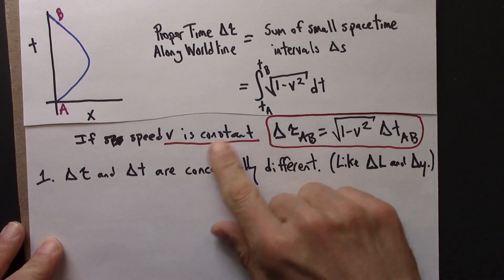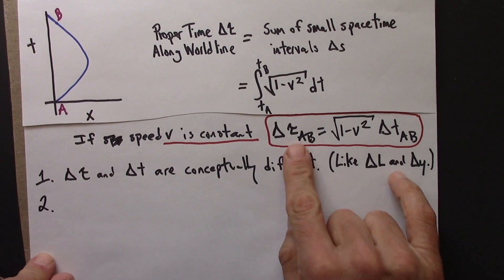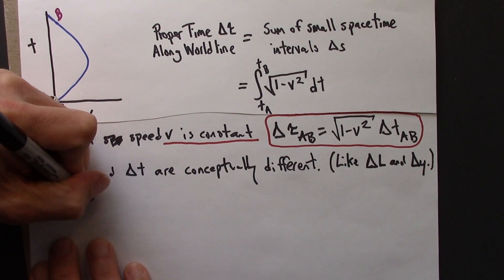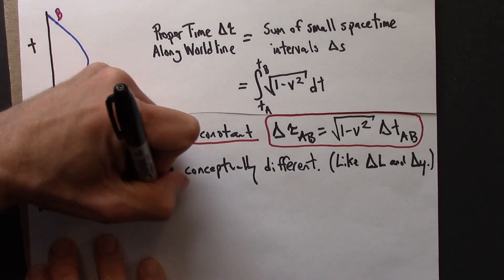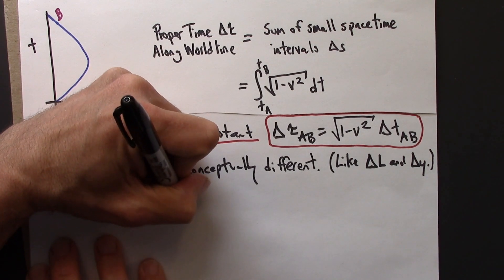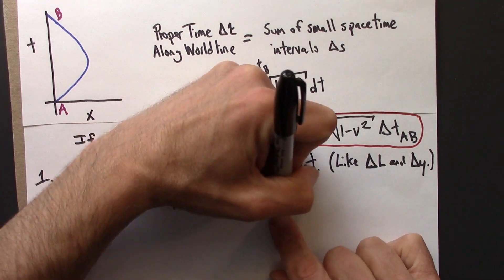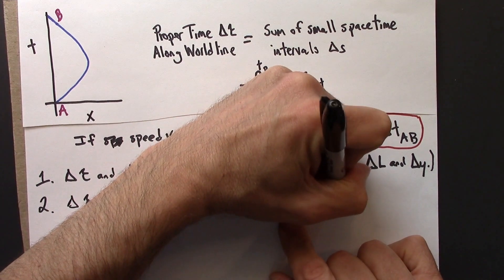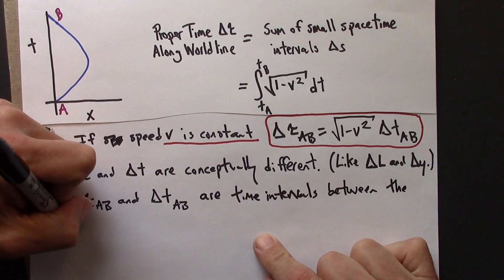The second comment I want to make is a reminder here that this and this always refers to time intervals between the same events. So delta tau AB and delta t AB are time intervals between the same events.